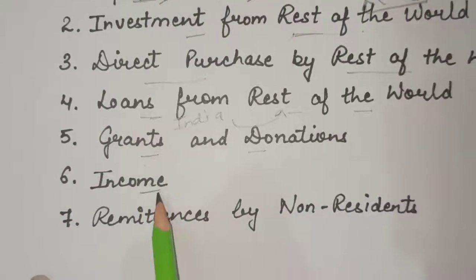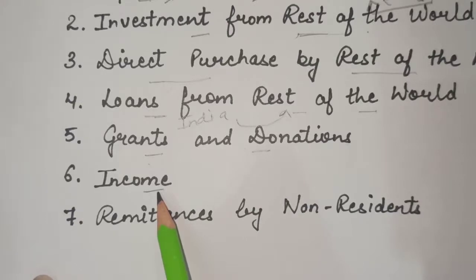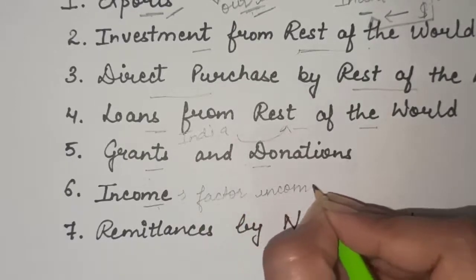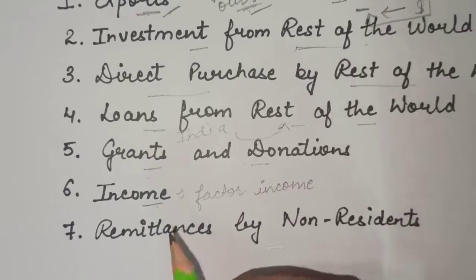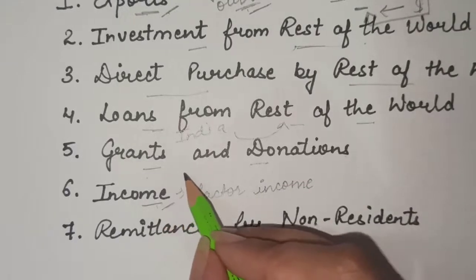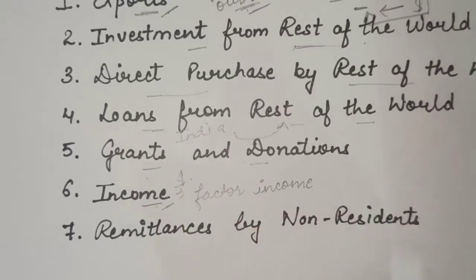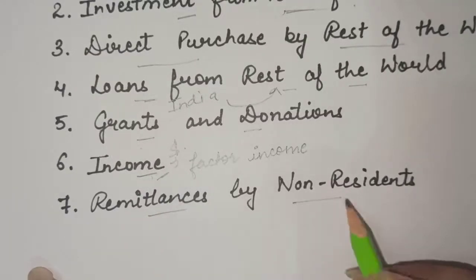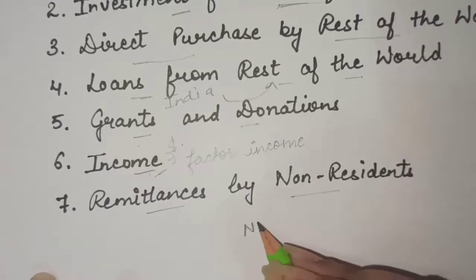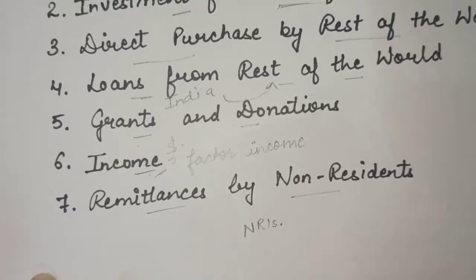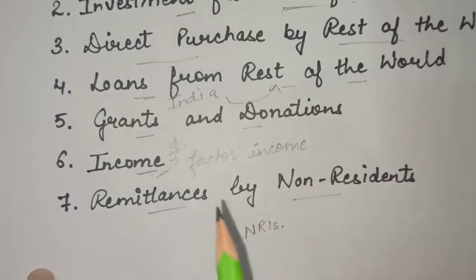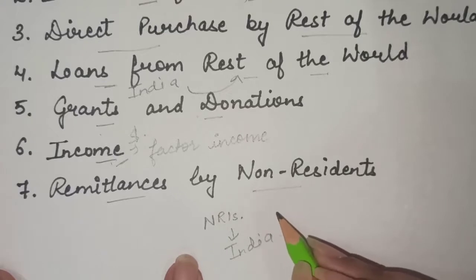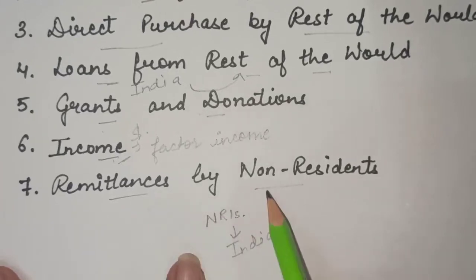Next is income — income is also an important source of foreign exchange, like factor income. When people of our country work in other countries, they get income in the form of foreign currency, which is a source of foreign exchange. Next is remittances by non-residents. NRIs who work in foreign countries receive allowances and send those allowances to India for their families. Those allowances are in the form of foreign currency, so this is also a source of foreign exchange.